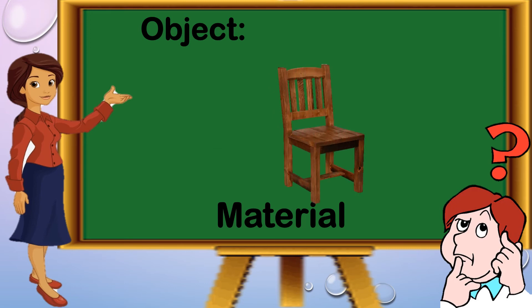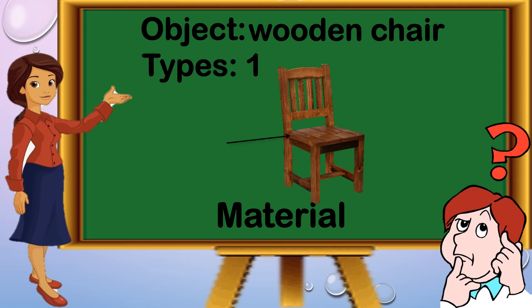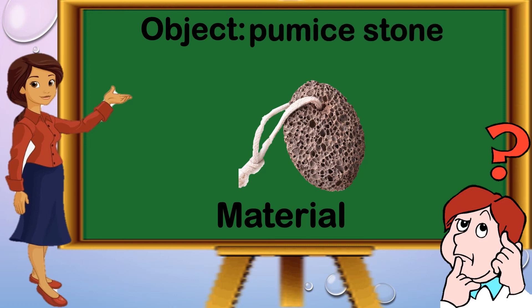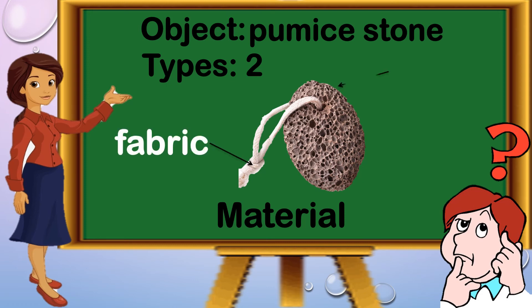Another object is wooden chair. There is only one type of material — we have wood. Another object is the famous stone. There are two types you can see. First, the handle is made up of fabric, and the stone is made up of rock: fabric and rock.